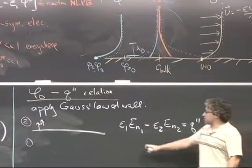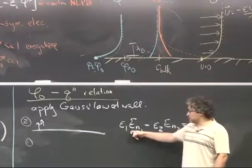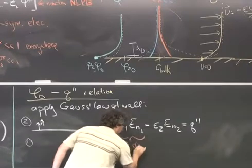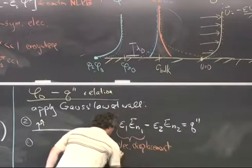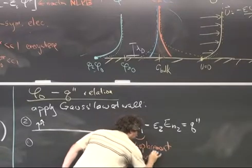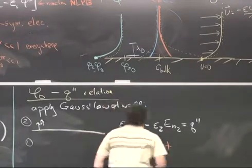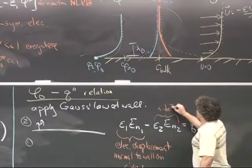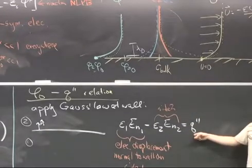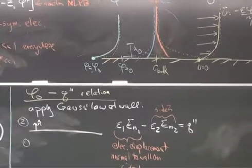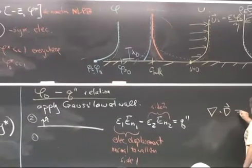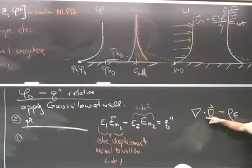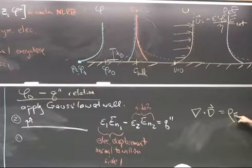In this way, this basically says that the component of the electric displacement aligned normal to the wall on side 1 and the same thing on side 2 must be explained by the presence of a net charge density. And in fact, this should look familiar to you. It should look similar to this expression, which is a bulk expression that says that the divergence of this electric displacement is related to a volumetric charge density.